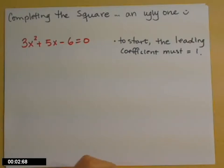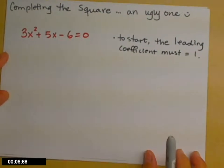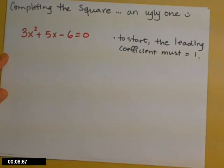So now let's use completing the square to solve a problem that's not so nice. 3x squared plus 5x minus 6 equals 0.